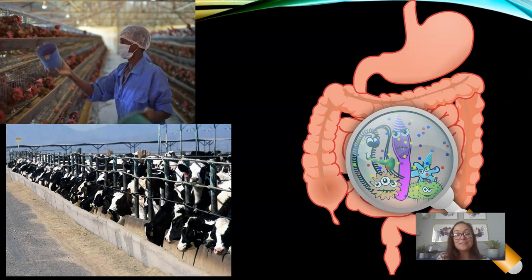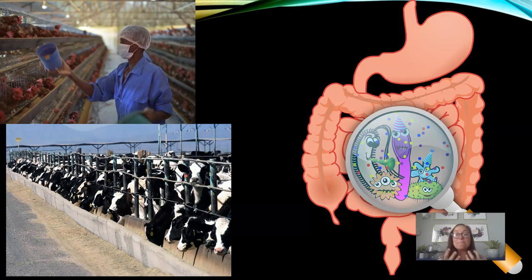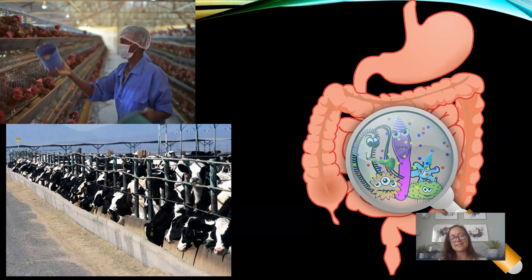As humans, we have an intimate relationship with thousands of species of bacteria that make up our microbiome. In our intestines especially, we have about three pounds of bacteria — our microflora. Most of our bacteria is beneficial to our survival; we live in a symbiotic, mutualistic relationship with them. These bacterial species are critically important for our overall well-being.